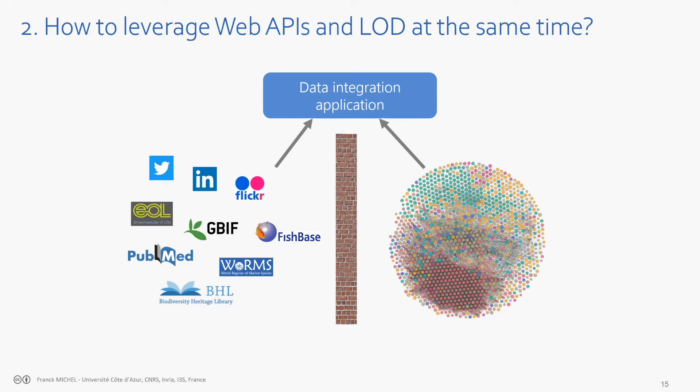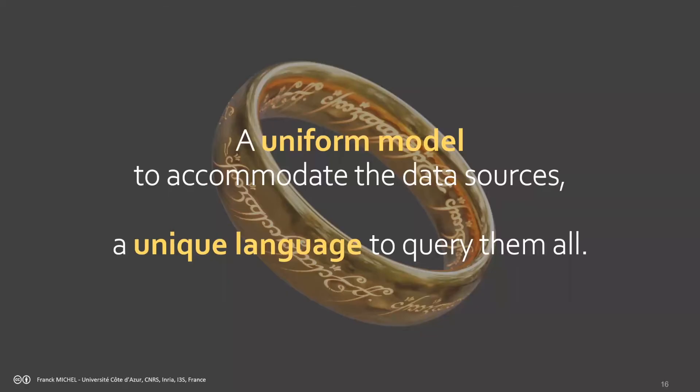A second impact is that on one side you have web APIs, and on the other side you have the web of data. These two worlds have more or less the same incentive — to provide useful data to the world — but technically it is pretty difficult to make sense of both together, even though they share the same rationale.